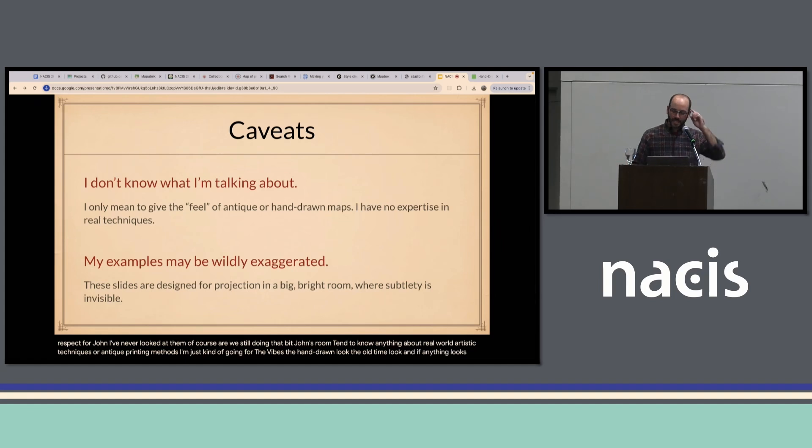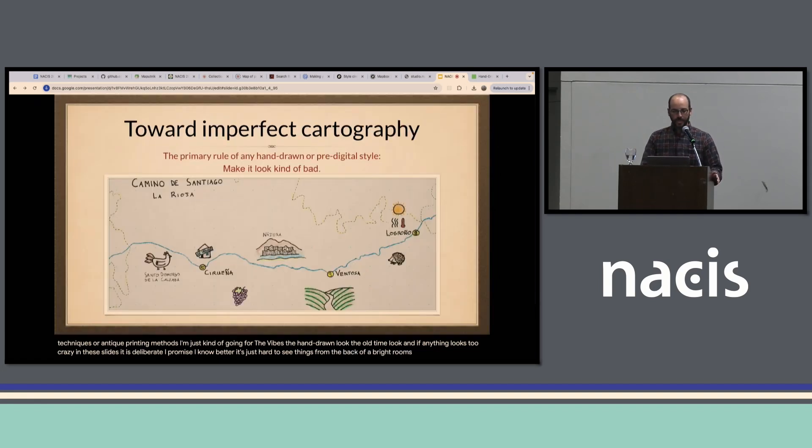If anything looks too crazy in these slides, it is deliberate, I promise, I know better. It's just hard to see things from the back of a bright room. The number one theme here is that for a map to look less like it was rendered by a computer and more like it was done by hand or etched and printed by some archaic method, it kind of has to look worse.